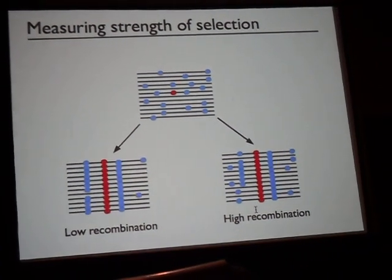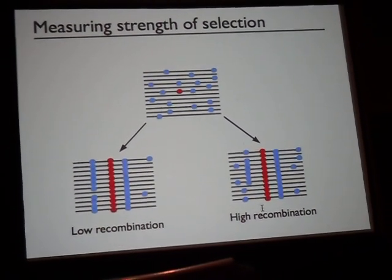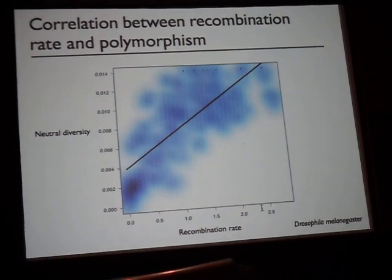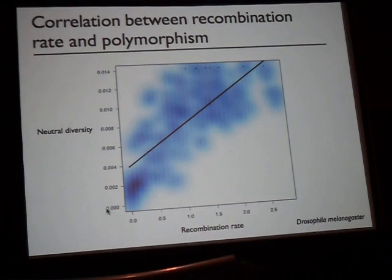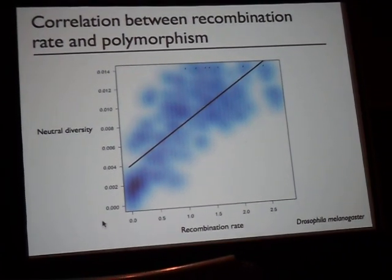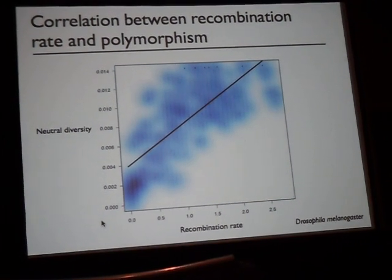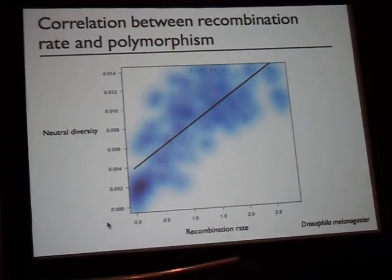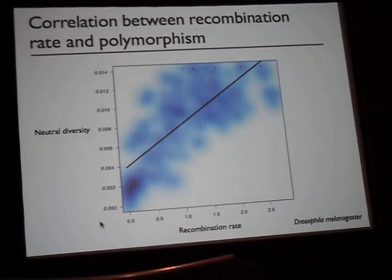This was actually shown more than 20 years ago by Begun and Aquadro and David Begun, but I can show it again with more modern data. On the x-axis is the recombination rate in Drosophila melanogaster, and on the y-axis is pi, a measure of neutral diversity. You can see there's a very strong positive correlation, from which we would infer that in this species, selection has had a big impact on neutral diversity — linked selection has removed a lot of variation.